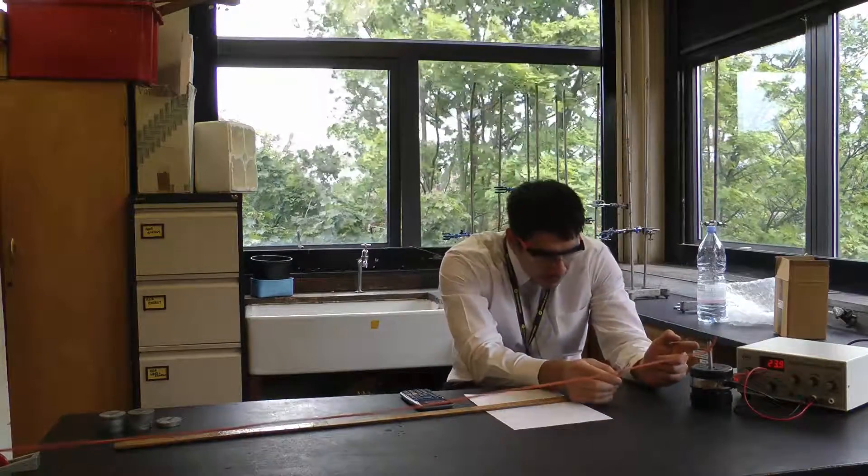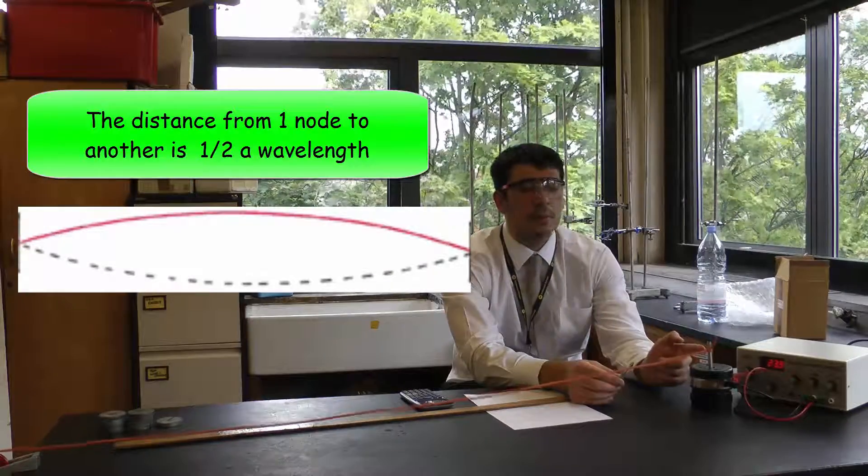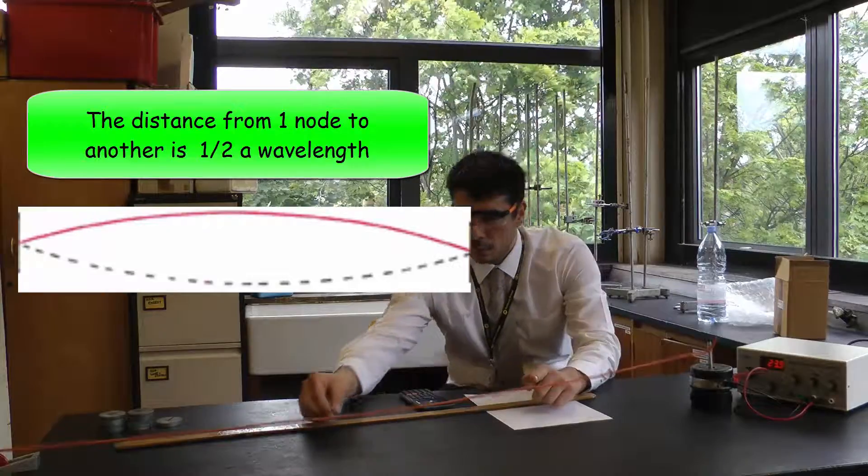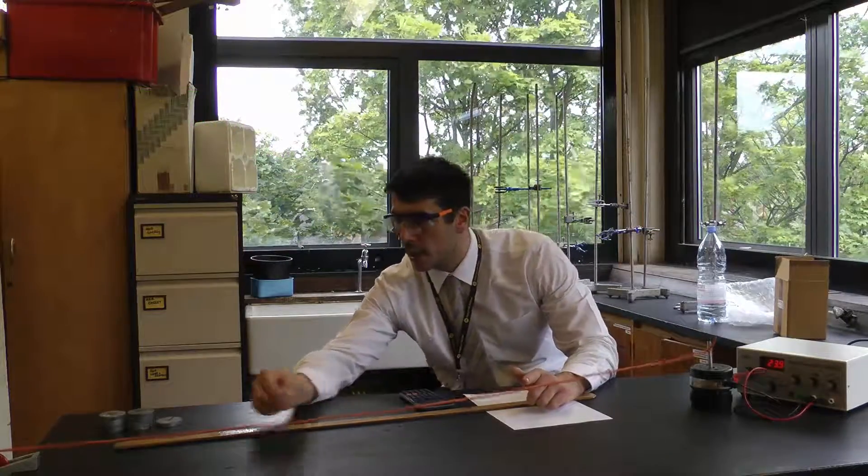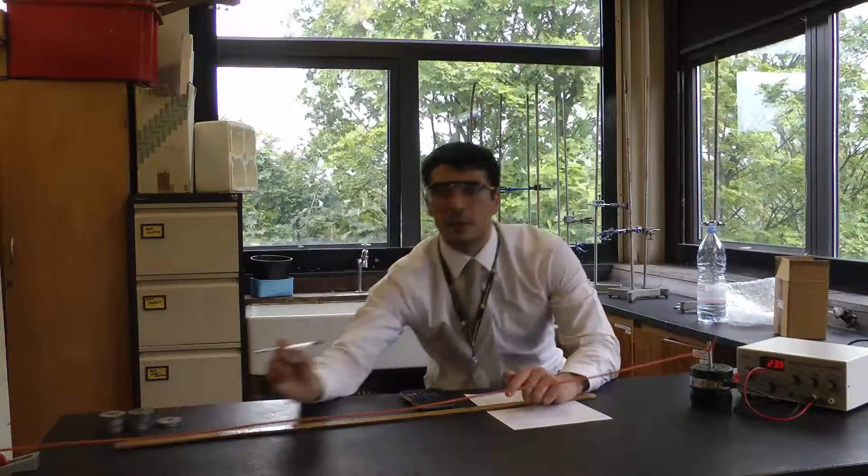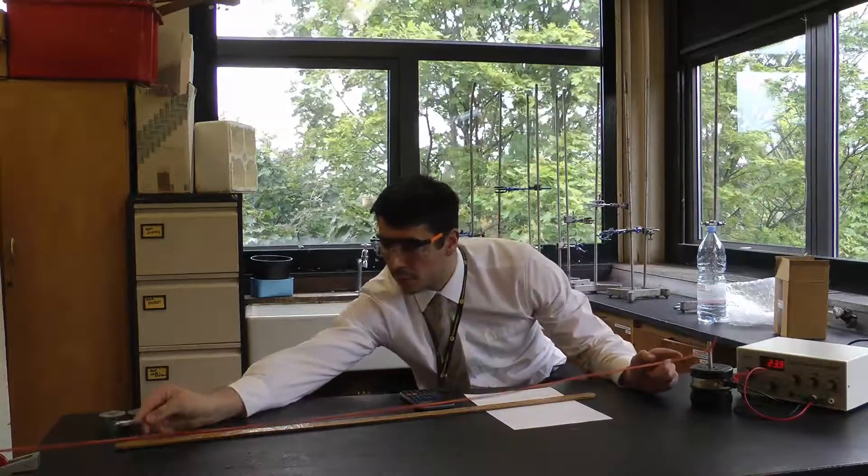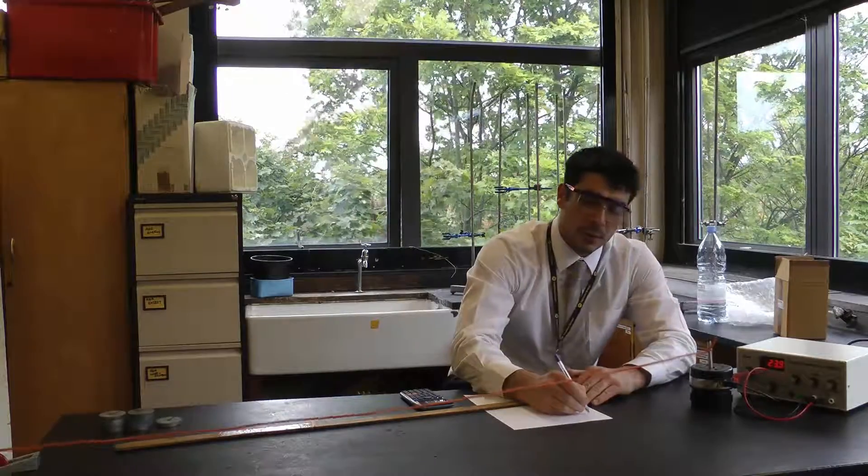On this, each node, this little chunk is half a wave, that's one full wave, another full wave, that's two full waves, another full wave and a half. So we've got three and a half waves.